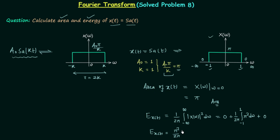The 2 in the numerator and the 2 in 2π cancel, and π in the numerator and π in the denominator also cancel, giving total energy equal to π. So to summarize: the total area of sinc(t) is equal to π, and the total energy of sinc(t) is also equal to π.